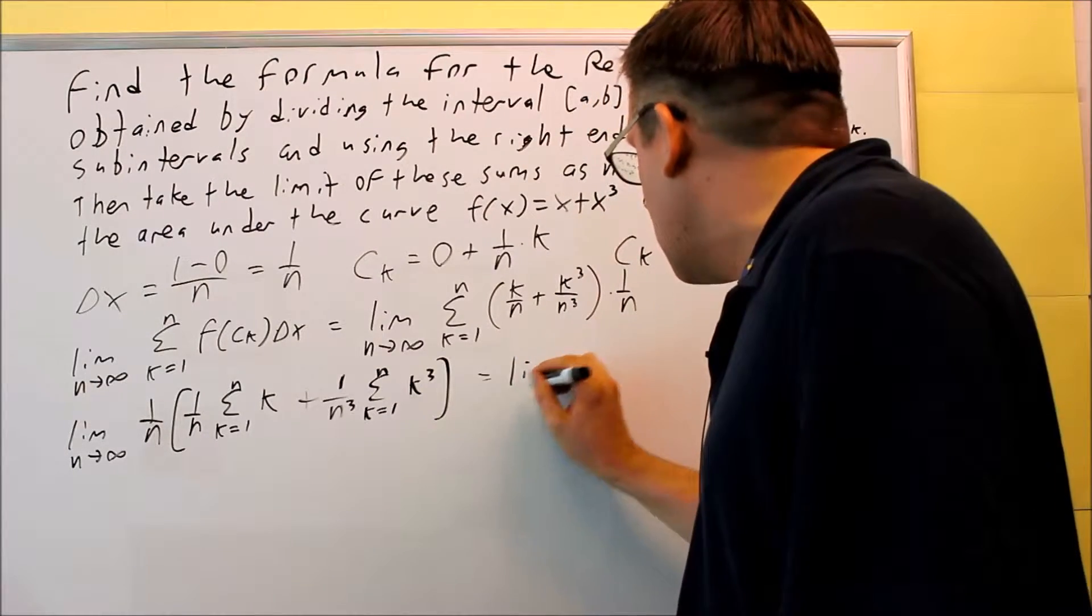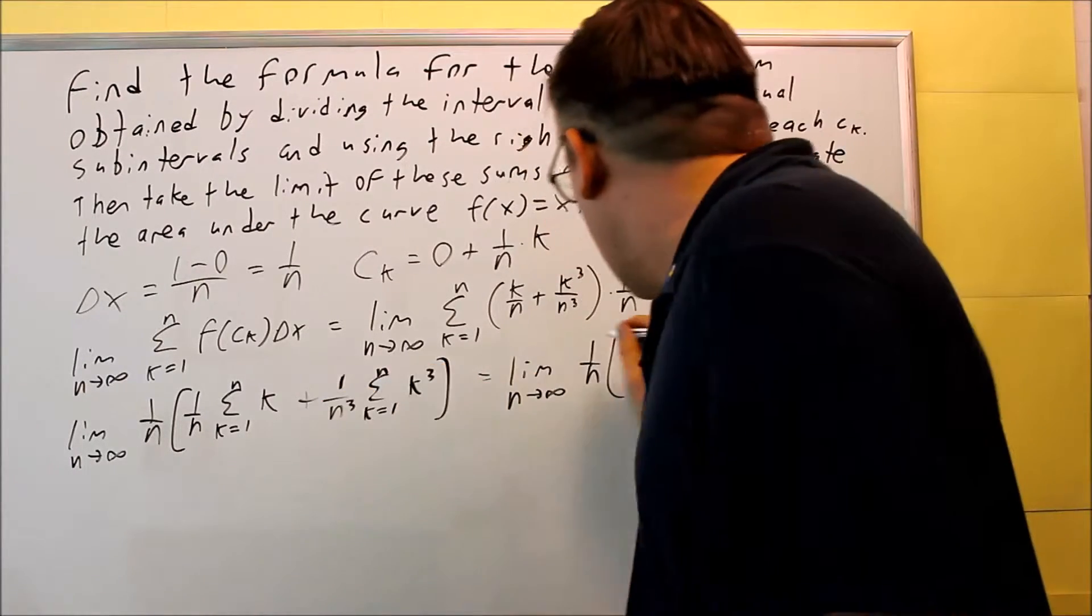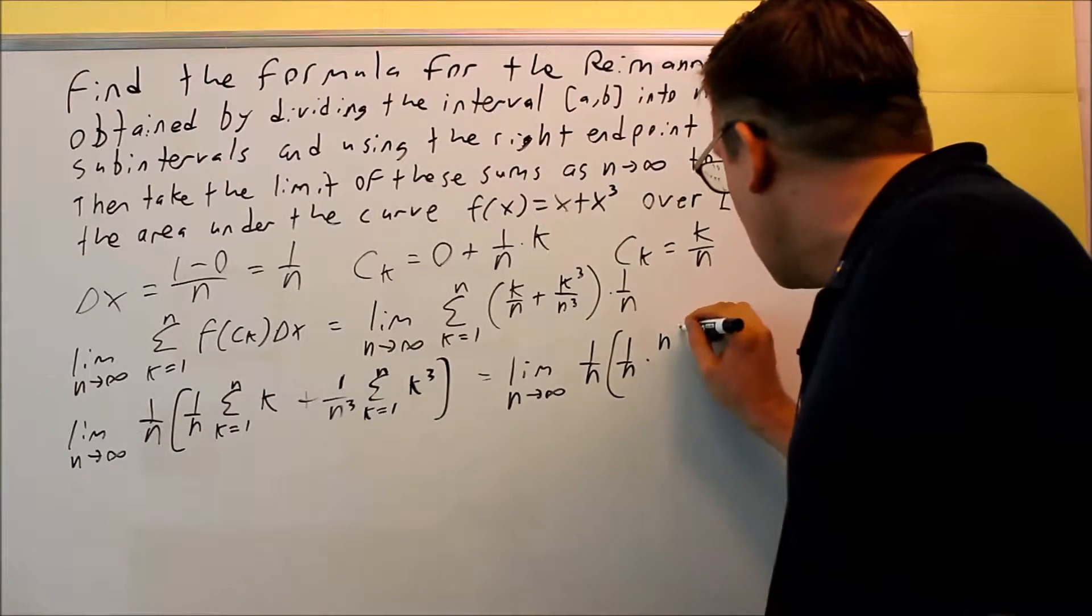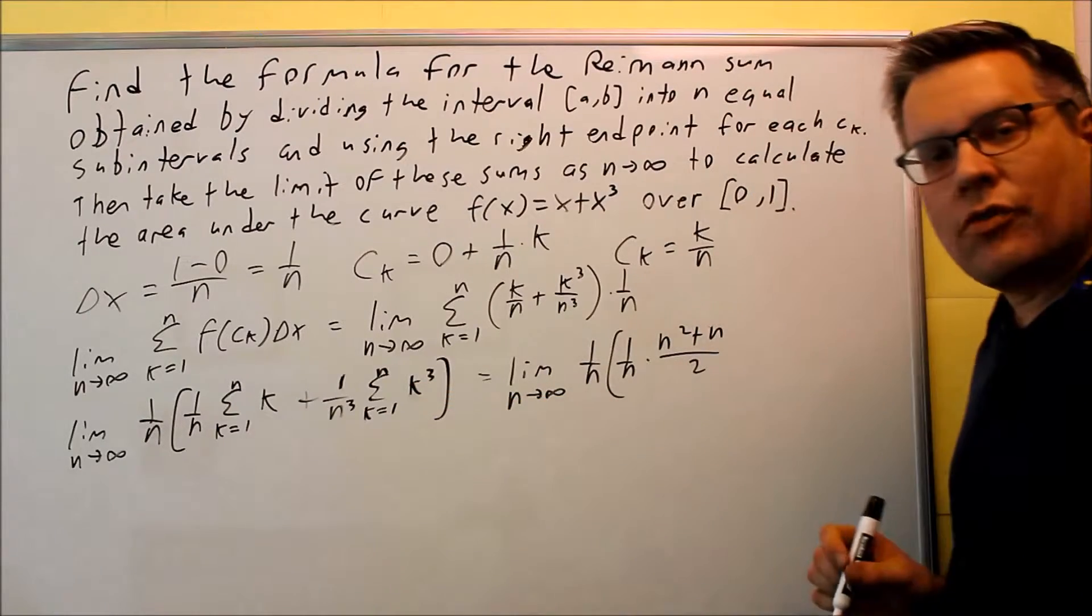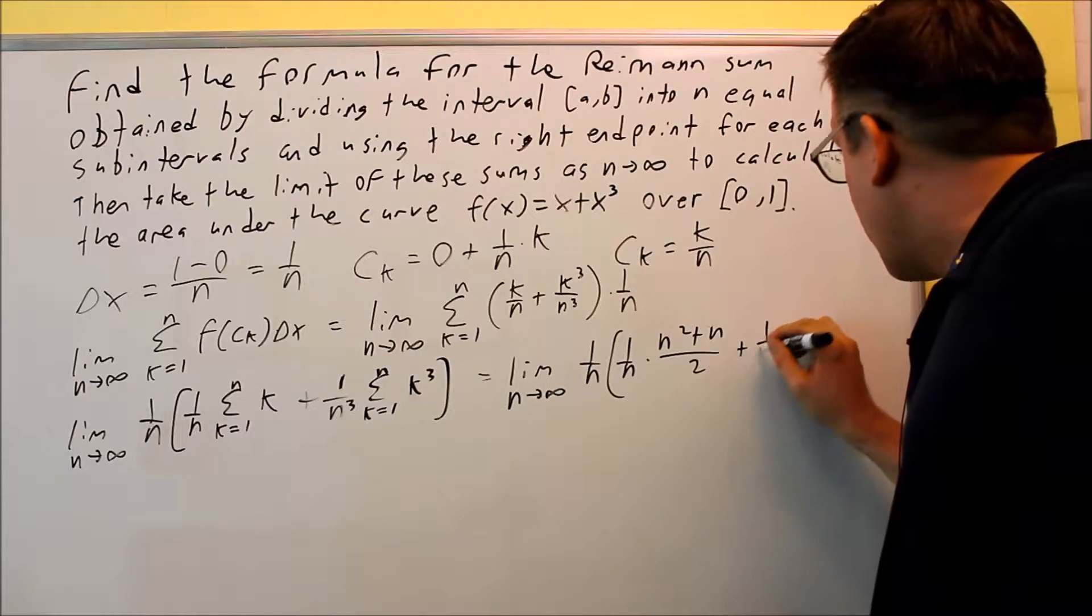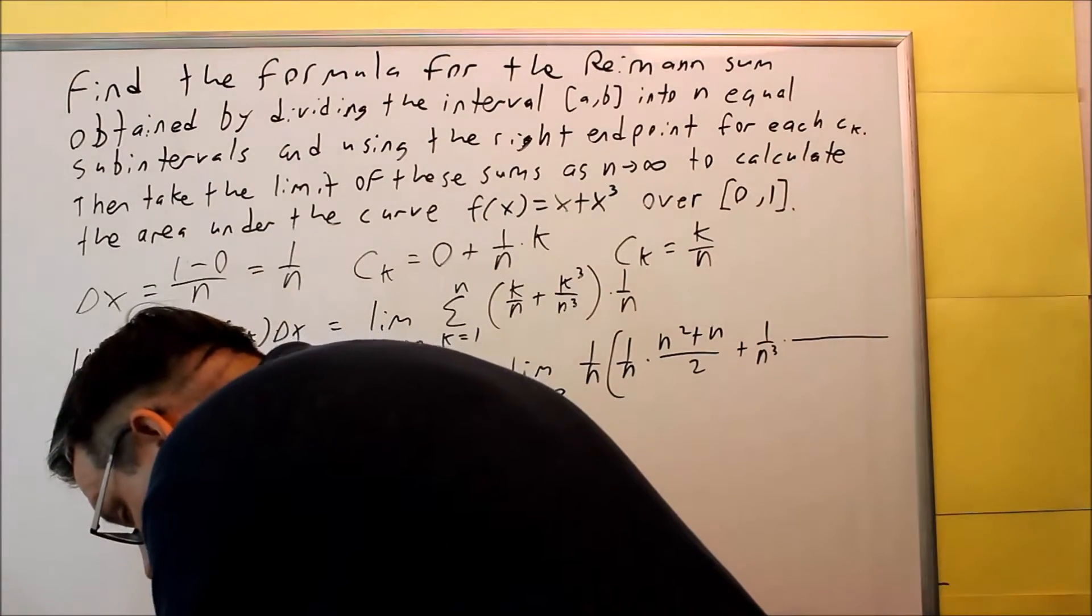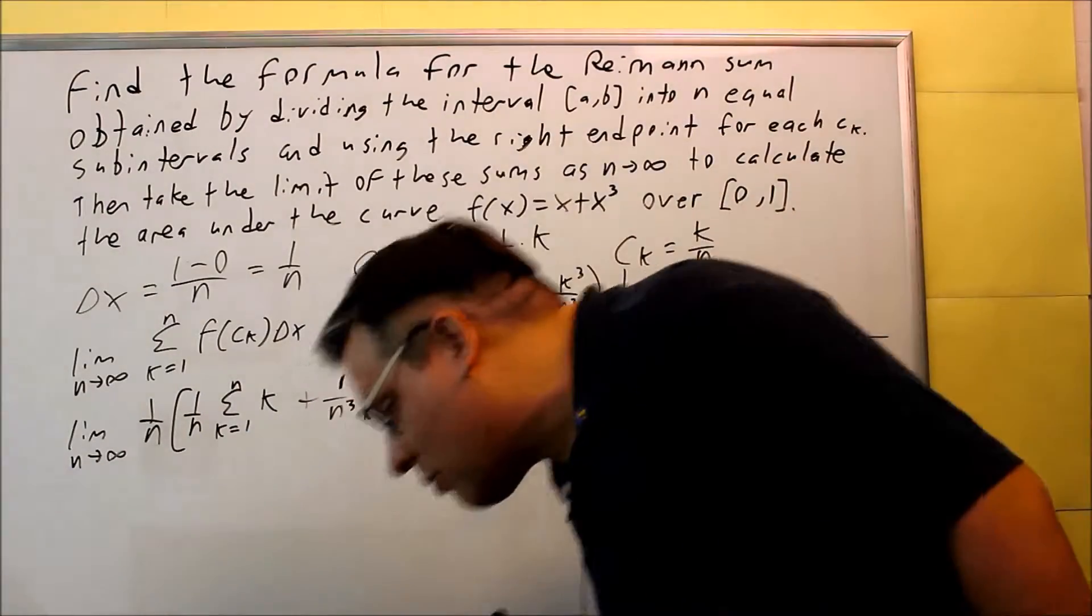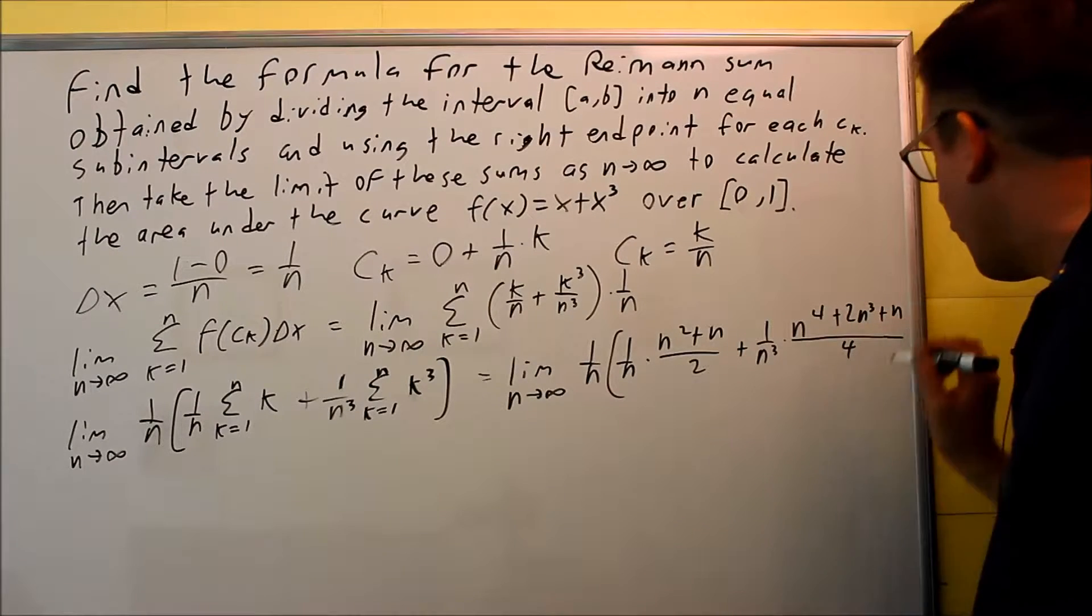So in fact, that's what I'm going to do next. I'm going to do limit n goes to infinity. I have 1 over n. And then I have 1 over n here. But then I need to use the formula for k. And that one's going to be n squared plus n over 2. That was the specific one just for k to the first power. The next one is I have 1 over n cubed. And then I'm multiplying this by the formula for k cubed here. So if I put that one in, I get n to the fourth, make sure I get it right here, plus 2n cubed plus n. And that's going to be over 4.